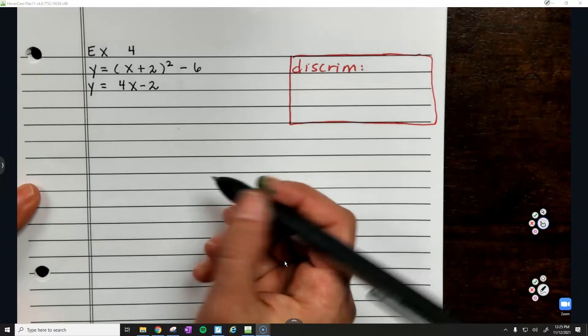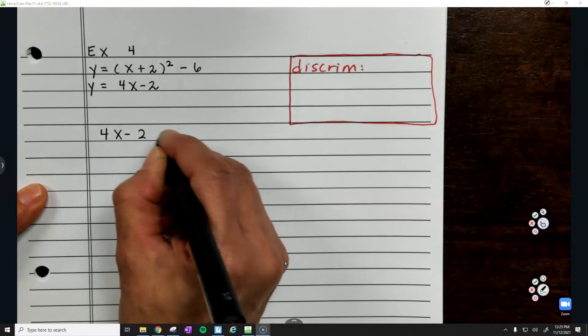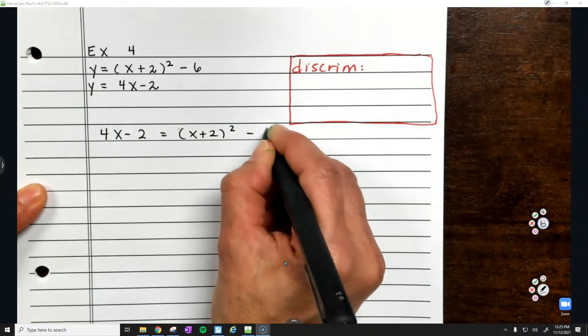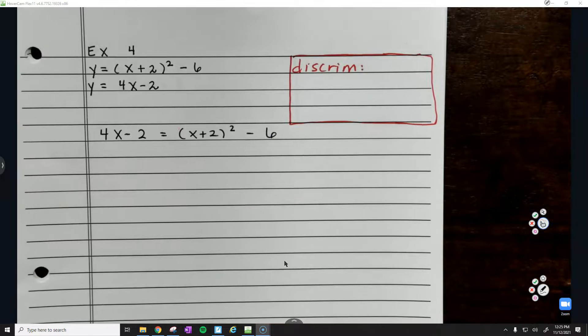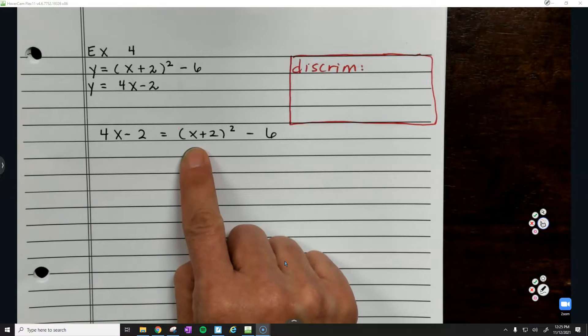They both equal y, so we're going to set them equal to each other. And then what? Equals 0. So we're going to move this stuff. We don't want that to be negative.